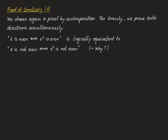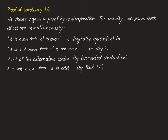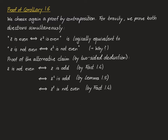The method of contraposition tells us that 'z is even iff z² is even' is equivalent to 'z is not even iff z² is not even.' Proving this alternative claim is easy based on Lemma 1.5: z is not even is equivalent to z being odd by Fact 1.4, which is equivalent to z² being odd by Lemma 1.5, which is equivalent to z² not being even by Fact 1.4. This completes the proof.